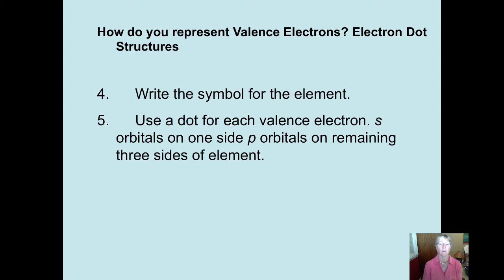You write the symbol for the element. And then you put dots around it. And the dots are one dot for each valence electron. Again, I would probably take exception with this, where it says put your s orbital electrons on one side and your p orbitals on the remaining sides. Don't do that. Just put dots down. It's not important, and it won't teach you the concept that you need to know.